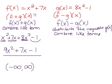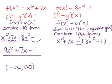f comes first so we write that down. We're subtracting g, so we distribute the negative to both terms behind it — the negative has to be multiplied by the first term and by the second term as well. This is what we mean by distribute. So we're going to have x squared plus 7x minus 8x squared plus 1.